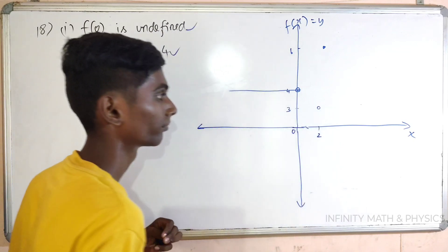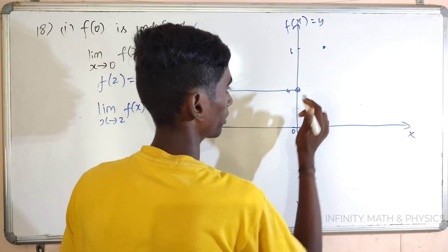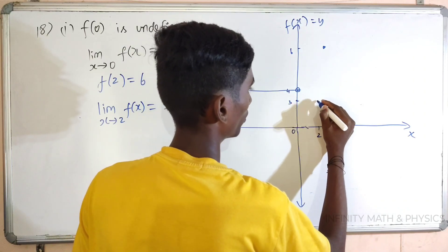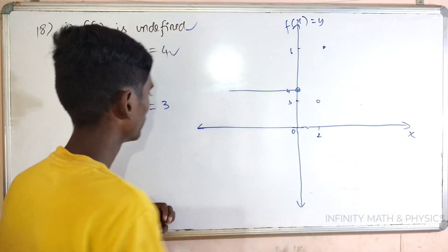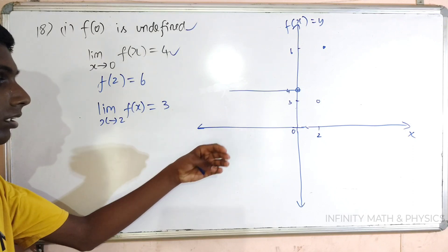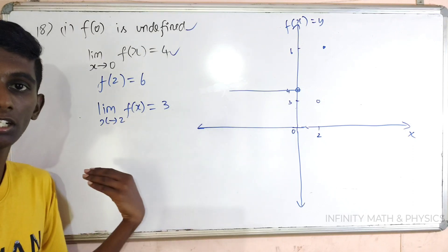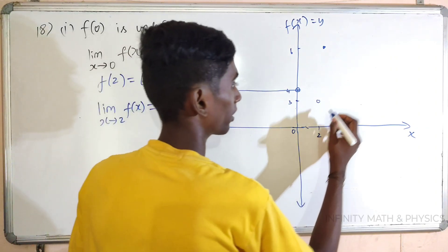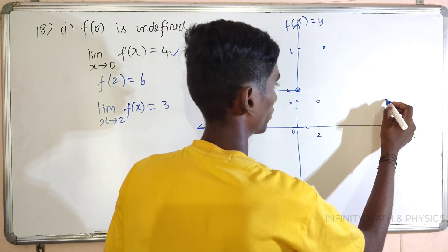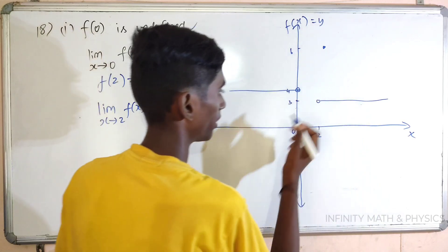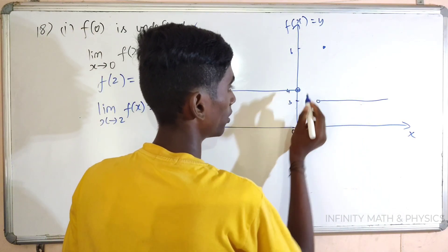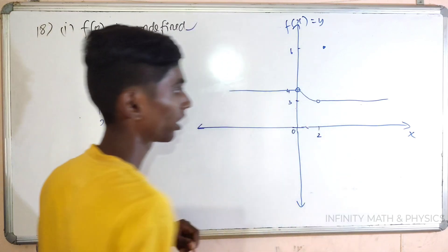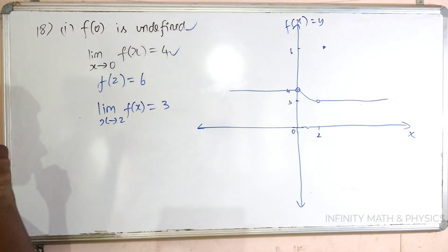I can put it here. If you want to put it here, I can put it here. I will approach the limit at 2. I will approach the minus side — the right side and the left side both approach 3.